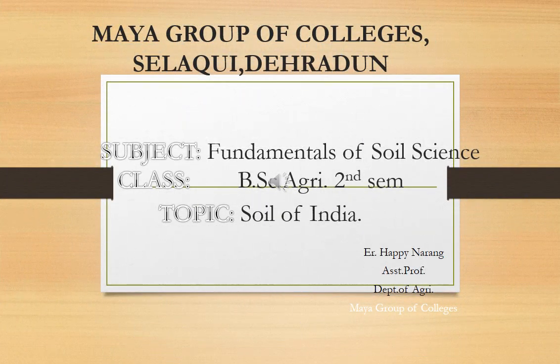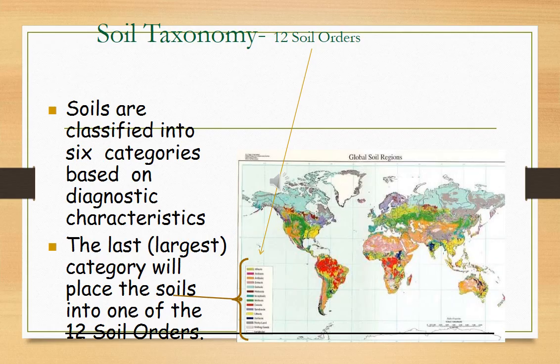Good afternoon class. I am Happy Narang, your subject teacher of Fundamental of Soil Science. Today we are going to discuss the topic that is Soil of India. The genetic system of soil classification is based entirely on soil genesis, termed as soil taxonomy.